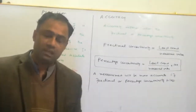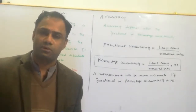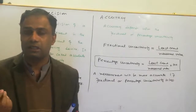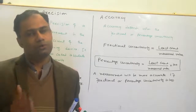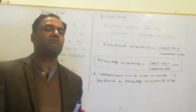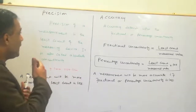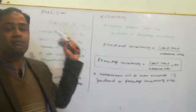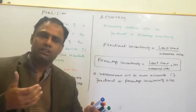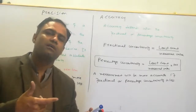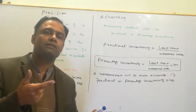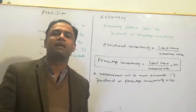For example, if you measured the value of G with two instruments and one gave a percentage uncertainty of 2% and the other gave 5%, then since 2% is less than 5%, the 2% measurement is more accurate. To summarize: compare least counts to determine which instrument is more precise, and compare fractional or percentage uncertainties to determine which measurement is more accurate.